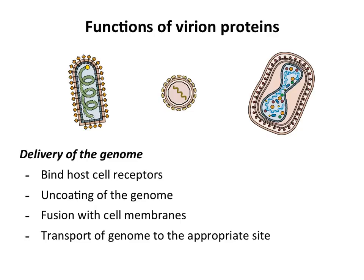On the other side, these virion proteins have to deliver the genome to the cell. In most cases the genome either gets out of the particle or is released in some way. The virion proteins have to bind cell receptors, participate in uncoating — the release of the genome into the cell. For viruses with membranes, the membranes have to fuse with the cellular membrane. Finally, the genome has to be brought to the right place in the cell — sometimes deeper into the cytoplasm, sometimes into the nucleus, which depends on the nucleic acid type, as you can predict from the Baltimore scheme.